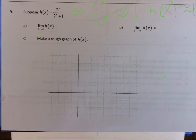Likewise, since our function h(x) is effectively 1, the limit as x goes to negative infinity of h(x) is going to be 1 as well.